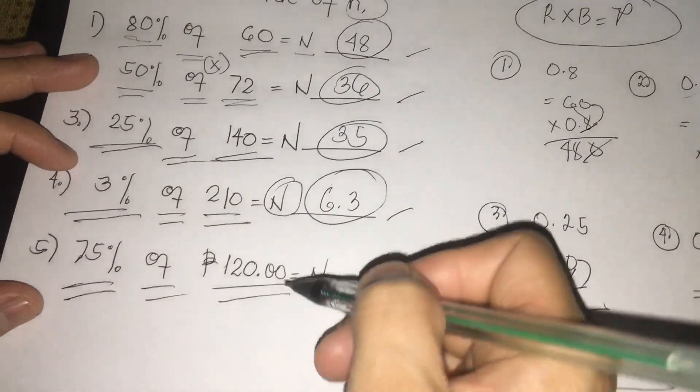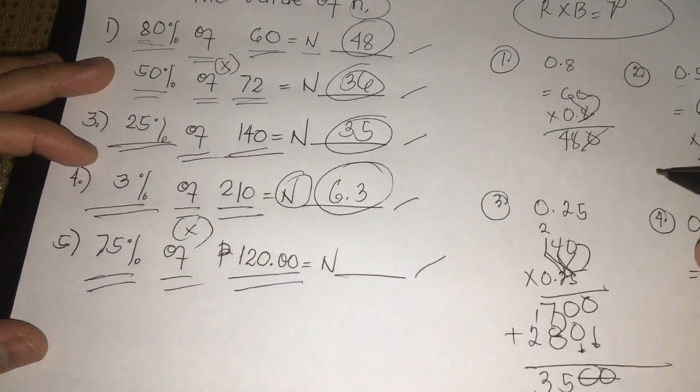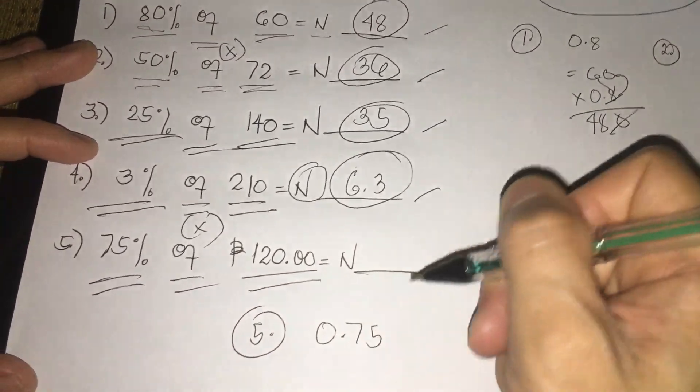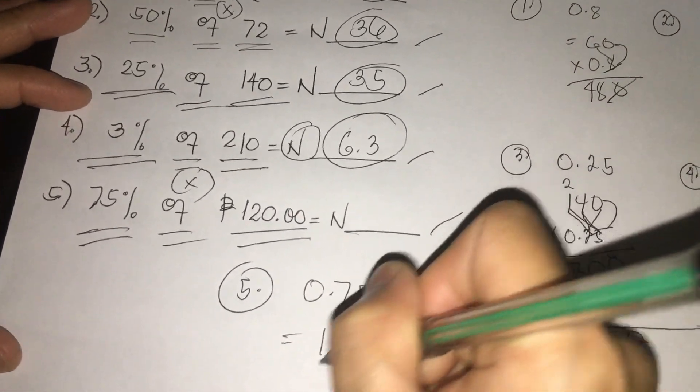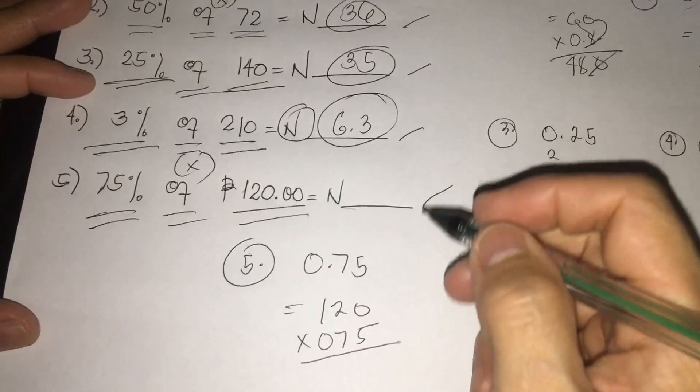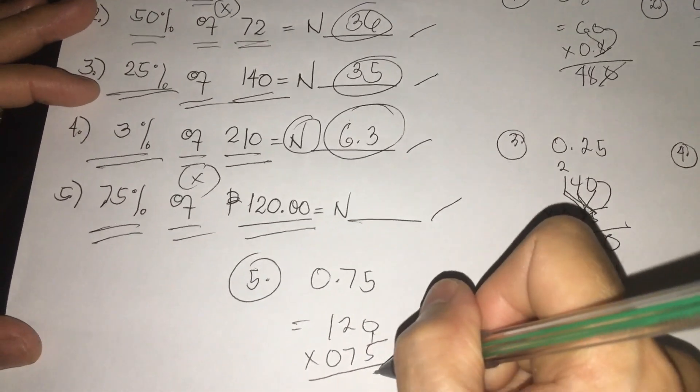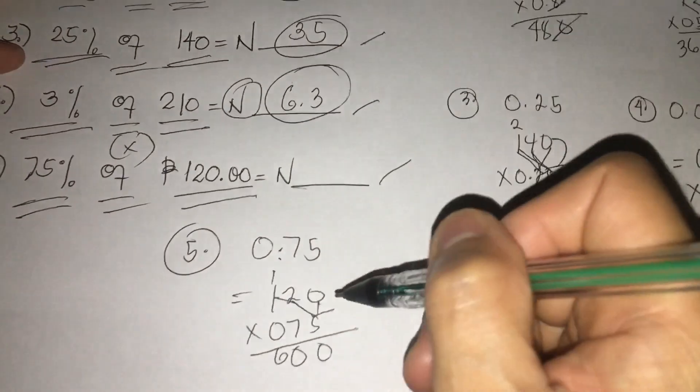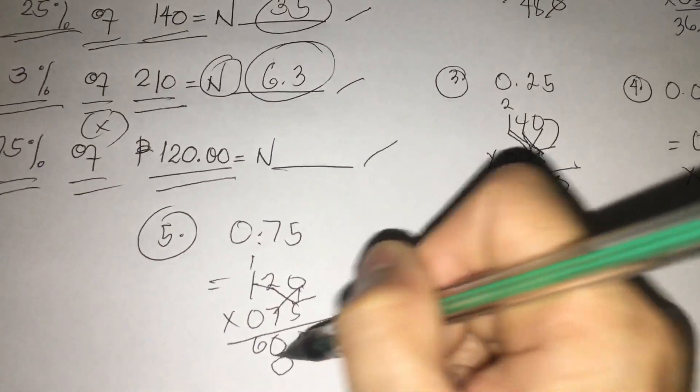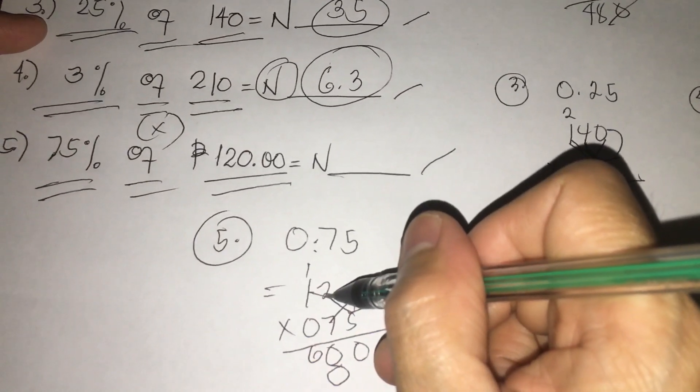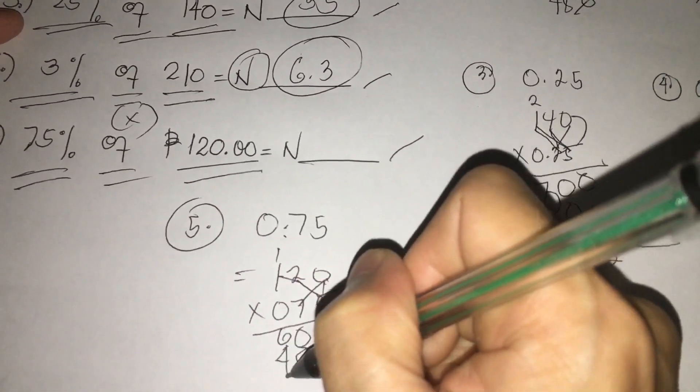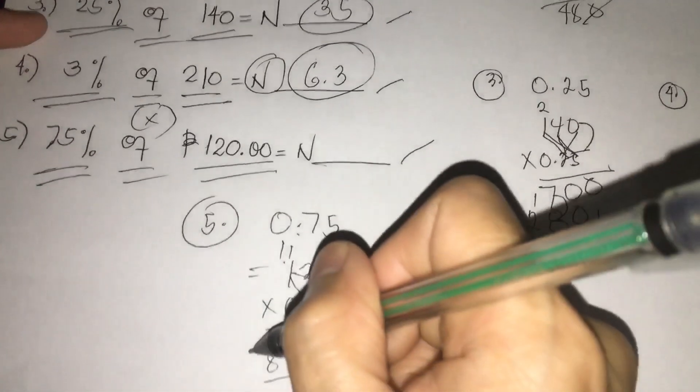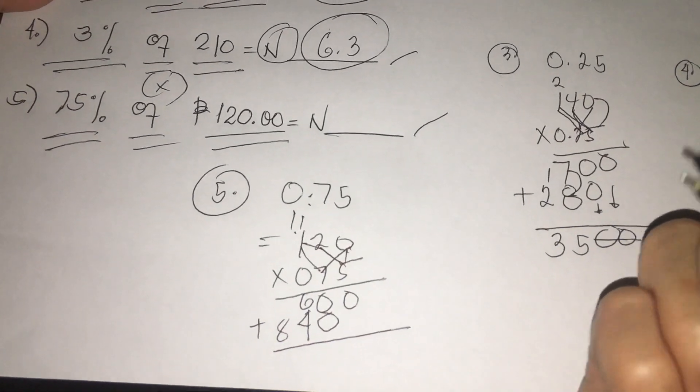Next is 75% of 120. Remember, 'of' is multiplication symbol or times. So we have for number 5: 0.75. So 120 times 0.75. Multiply first: 0 times 5 is still 0, 2 times 5 is 10, write 0, regroup 1. 1 times 5 is 5, plus 1 is 6. Next: 7 times 0 is 0, next 7 times 2 is 14, write 4, regroup 1. 1 times 7 is 7, plus 1 is 8. Let's put here an addition sign first.